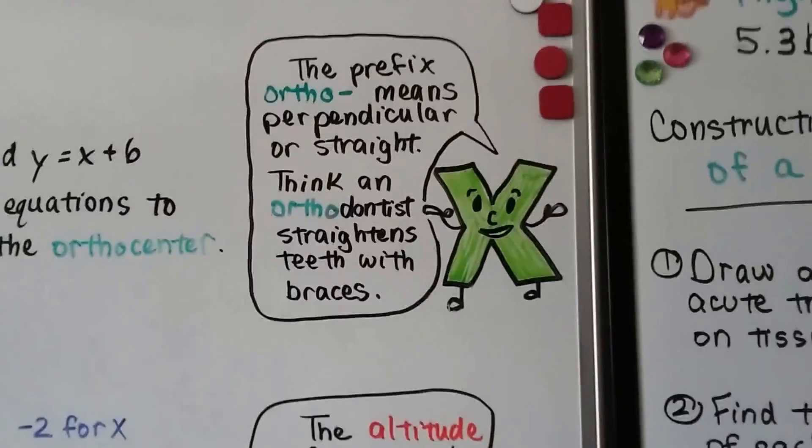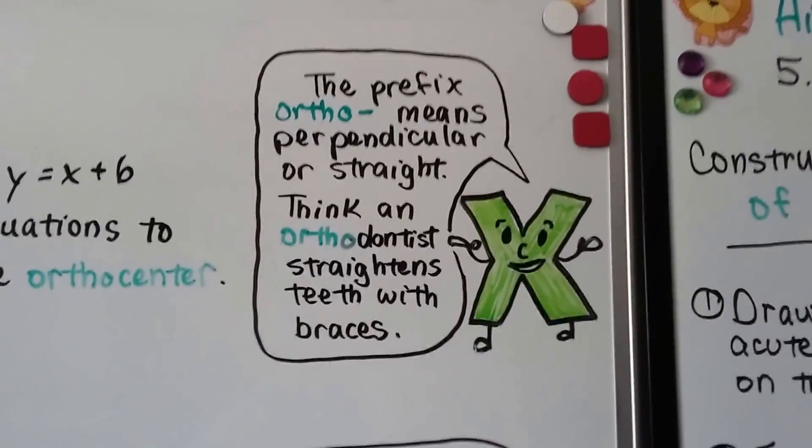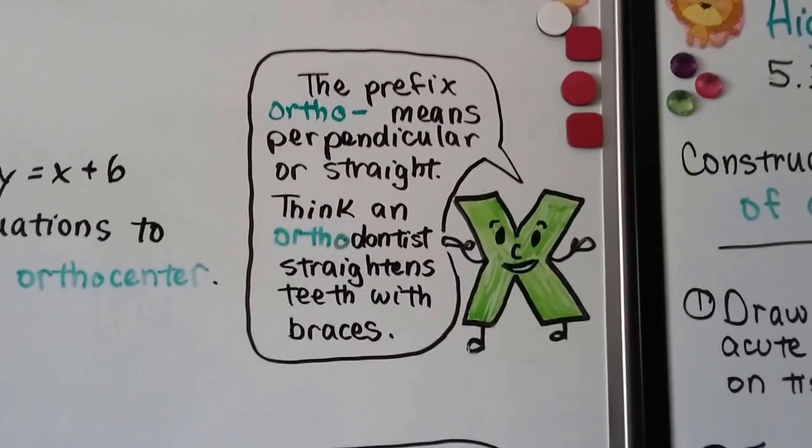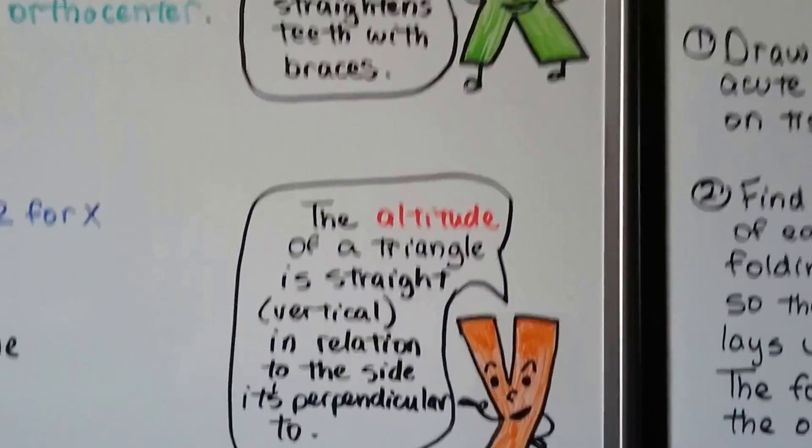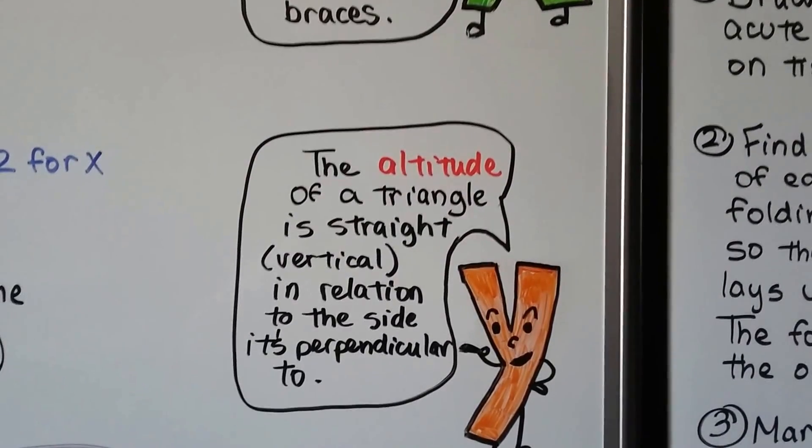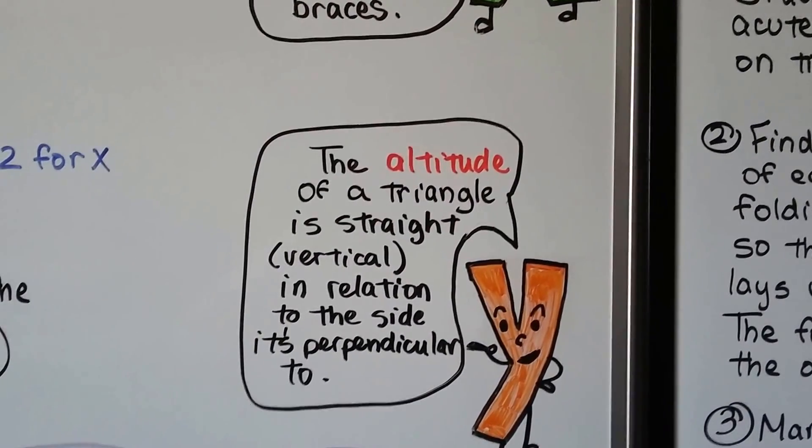And the prefix ortho means perpendicular or straight. So you can think of an orthodontist straightens teeth with braces. And the altitude of a triangle is straight. It's vertical in relation to the side it's perpendicular to.